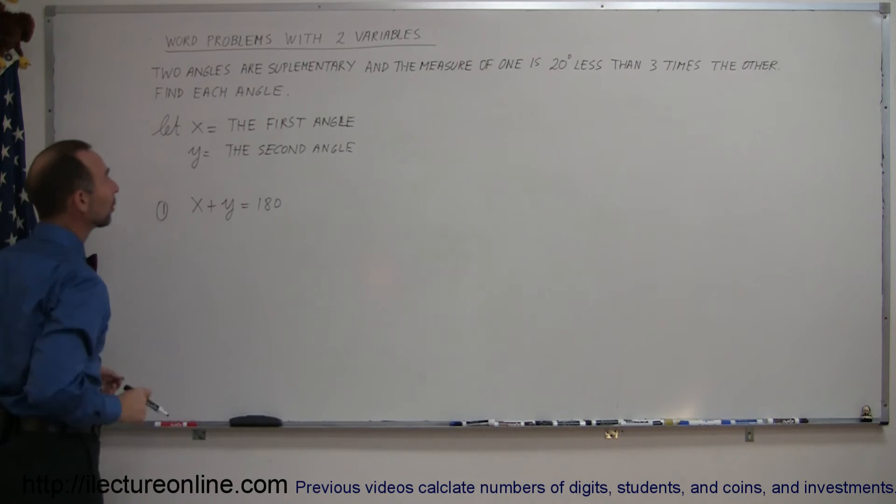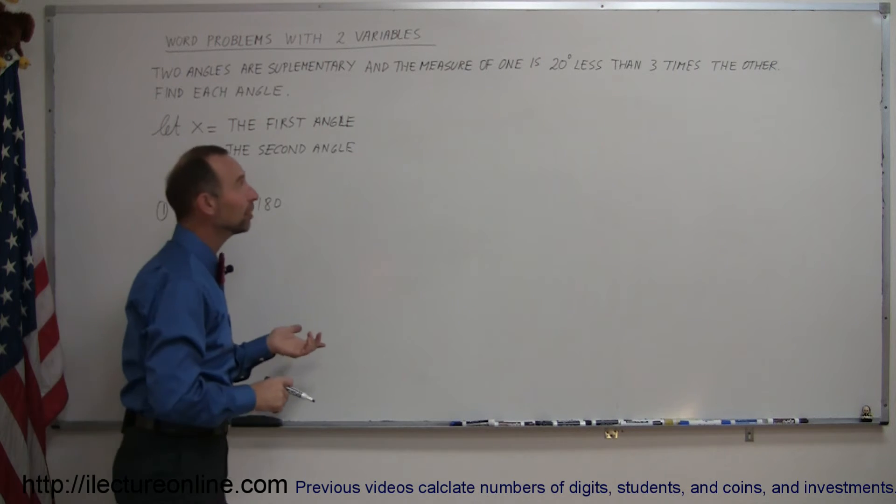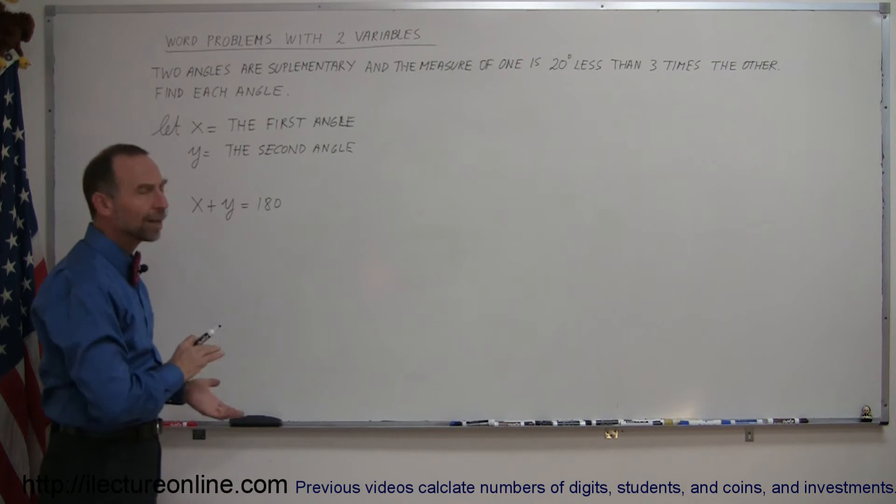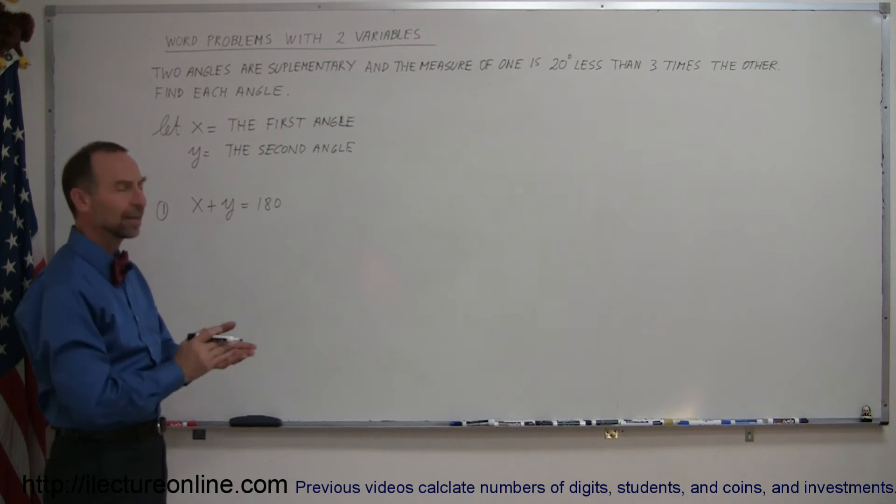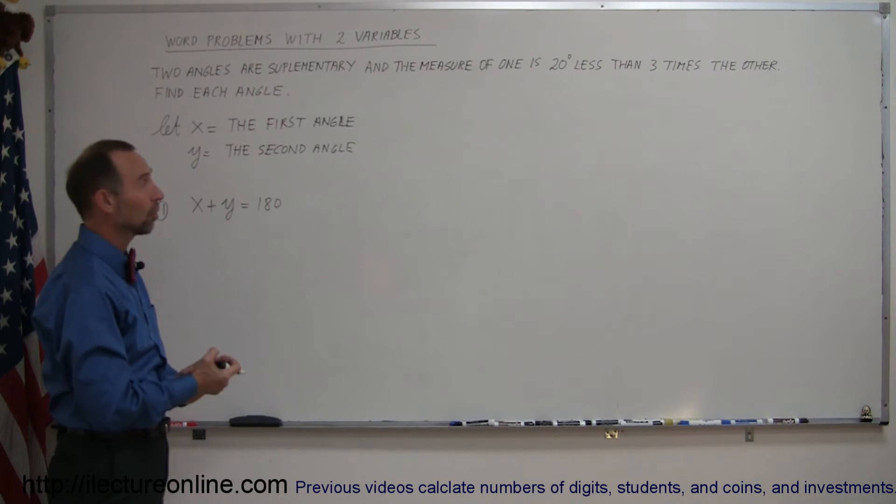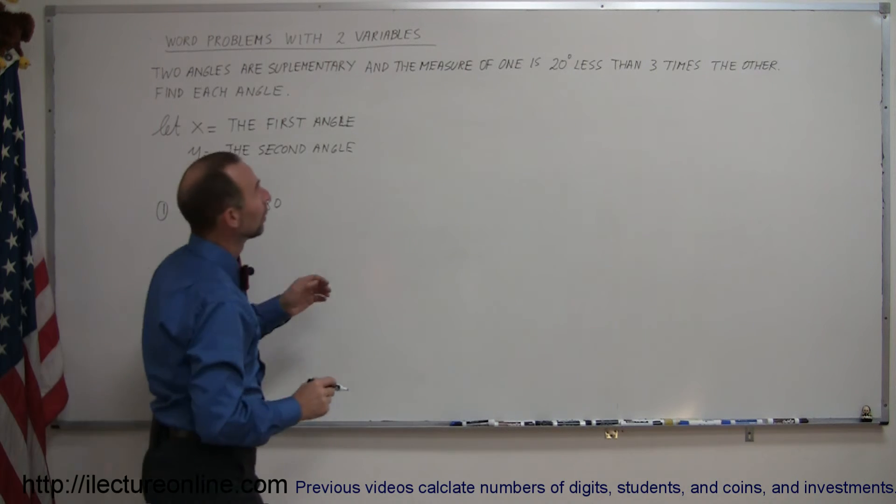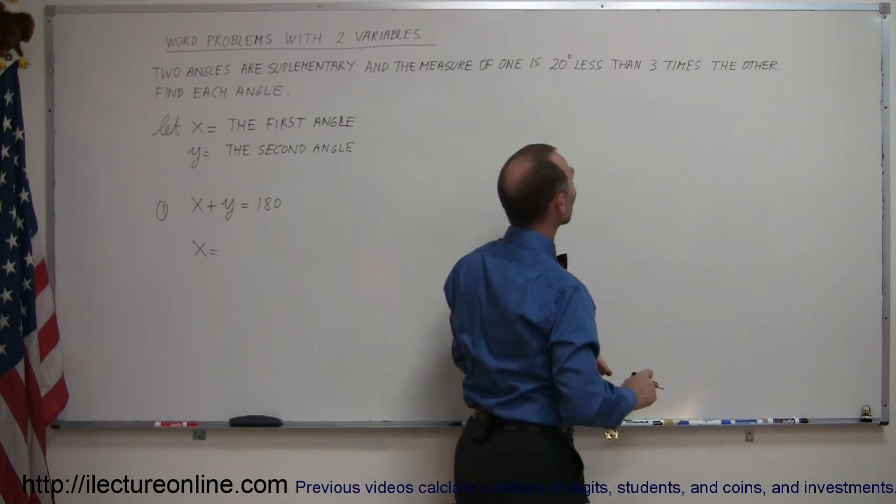Now, to get the second equation, they give us the information that says that the measure of one is 20 degrees less than three times the other. Now, does it really matter which one I take as one and which one I take as the other? Not really. We're going to get two angles, one way or the other.